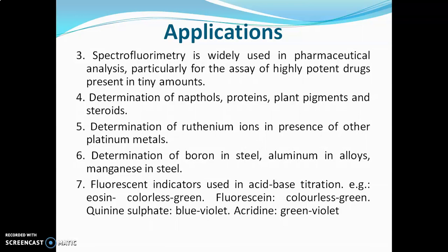Further applications include the determination of ruthenium ions in the presence of platinum metals, determination of boron and aluminium in the presence of steel. Fluorescence indicators are widely used in titrations — examples include eosine (endpoint colorless to green), fluorescein, quinine sulfate, and acridine.